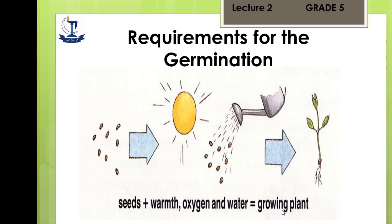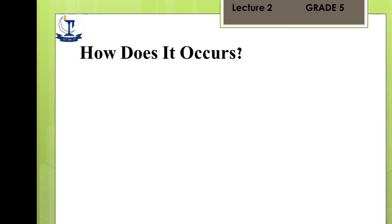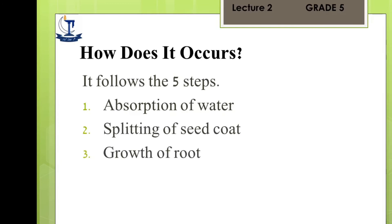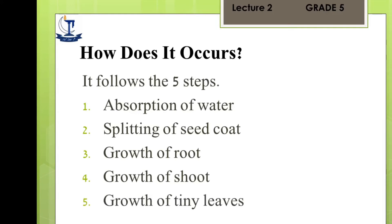Here is a block diagram for the complete process of germination. The seed receives warmth, oxygen (air), and water, resulting in a growing plant. The complete process of germination consists of five steps: number one, absorption of water; number two, splitting of the seed coat; number three, growth of the root; number four, growth of the shoot; number five, growth of the tiny leaves.